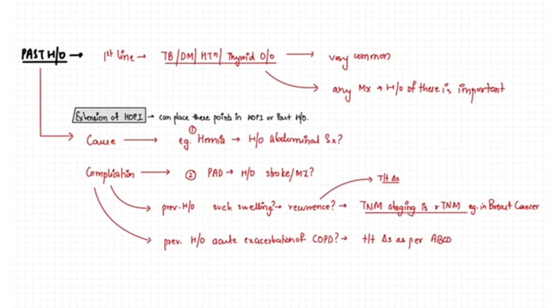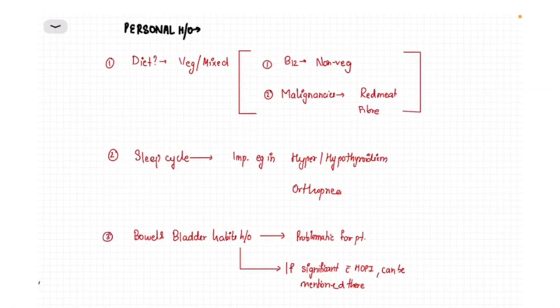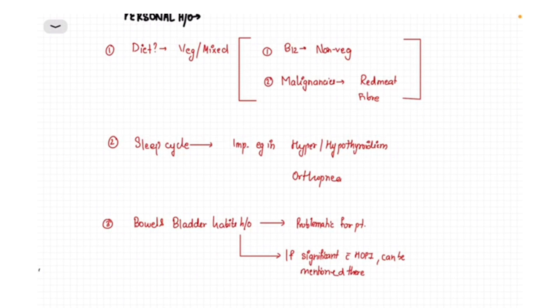Personal history includes diet, sleep cycle, bowel bladder habits, substance abuse, and allergy to medication. The first one is diet, in which we ask if the patient takes a vegetarian diet or takes a mixed diet.